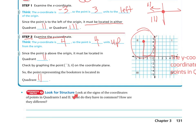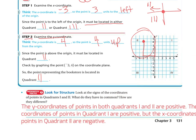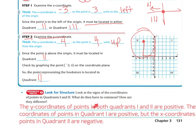Look for structure. Look at the signs of the coordinates of the points in quadrants 1 and 2. What do they have in common, and how are they different? The y-coordinates of points in both quadrants 1 and 2 are positive. The x-coordinates of points in quadrant 1 are positive, but the x-coordinates in quadrant 2 are negative. So quadrant 1 is positive, positive, but in quadrant 2, it's negative, positive.